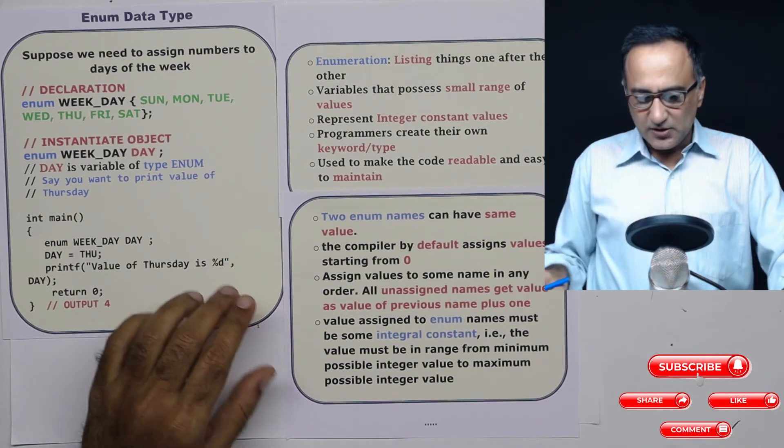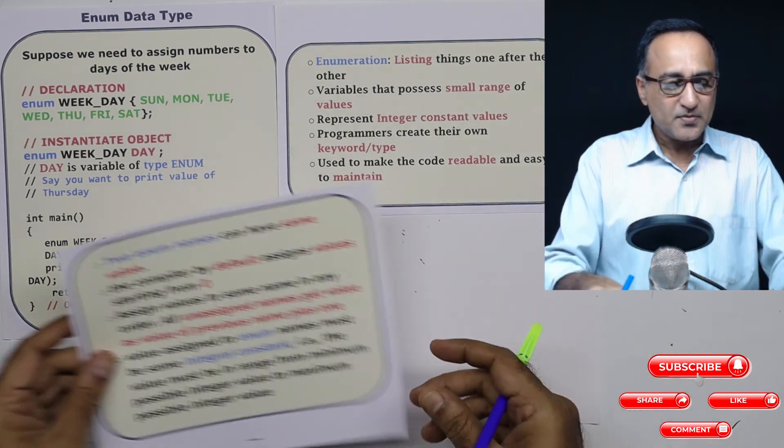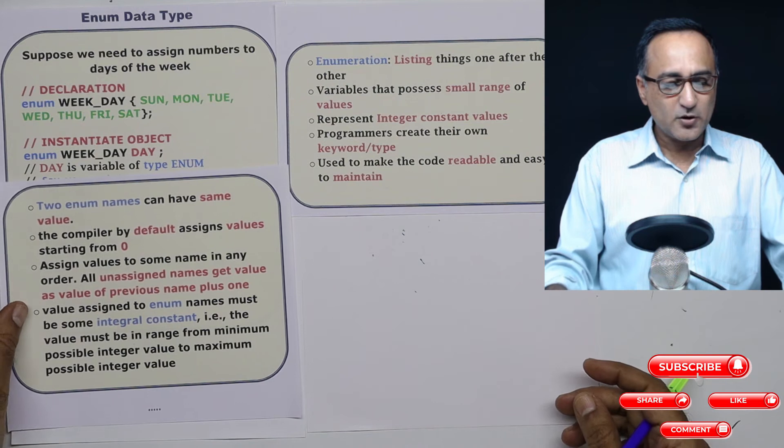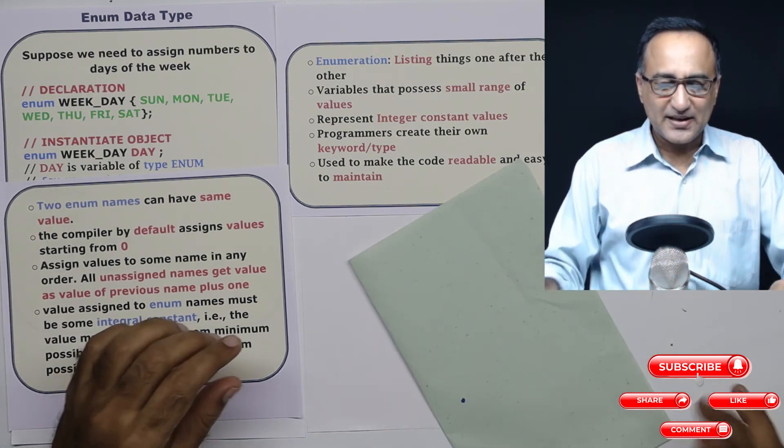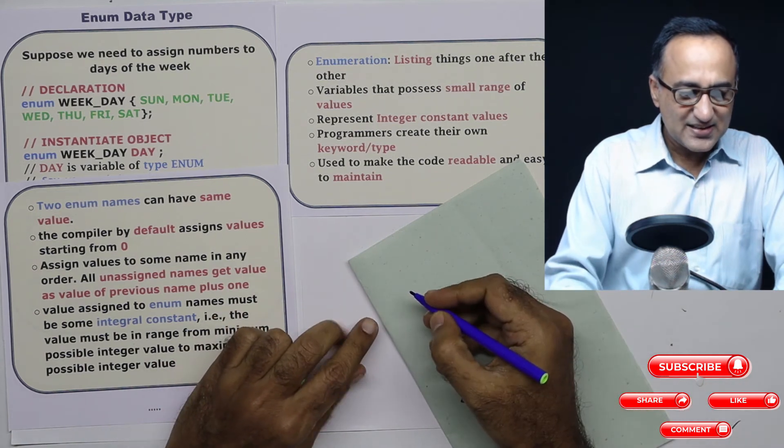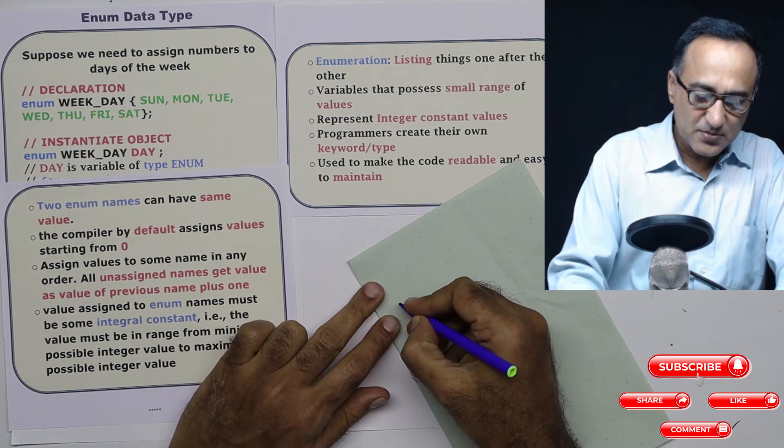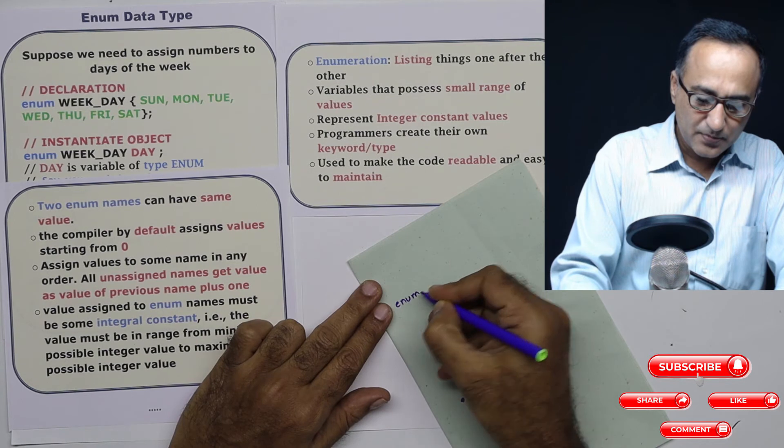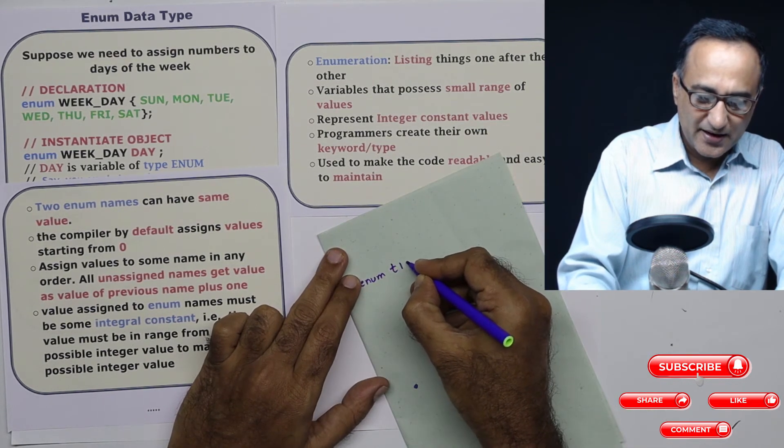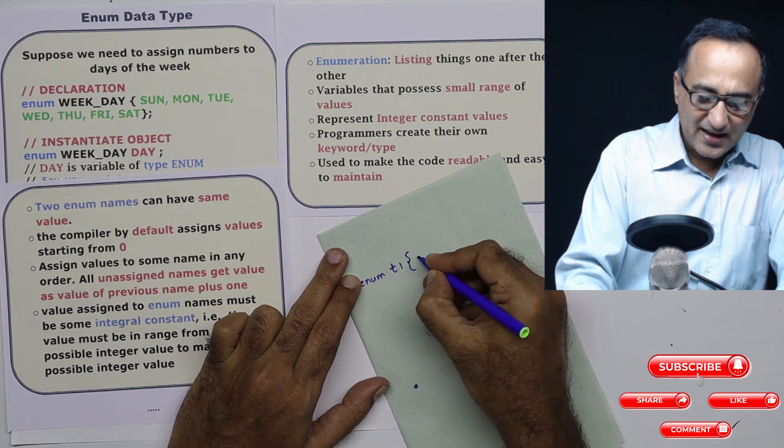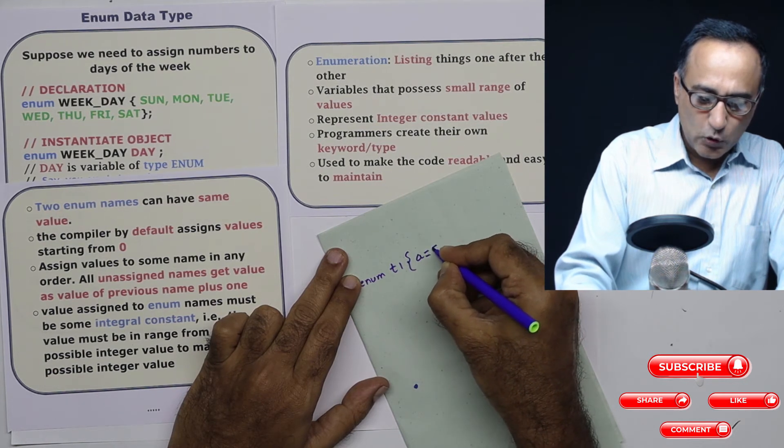Now, there are a few things you need to take here and make an effort to understand. Now suppose I do something like this. Let me say I have enum, let's say I have a variable called as t1. And I do something like this, I can say a is equal to 5.